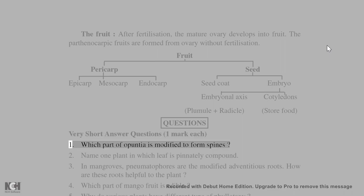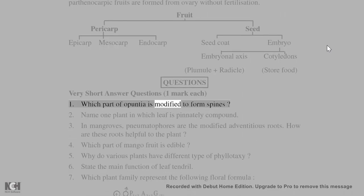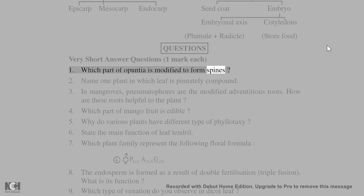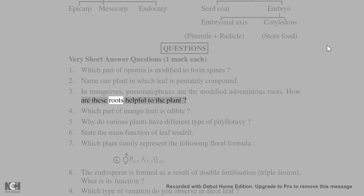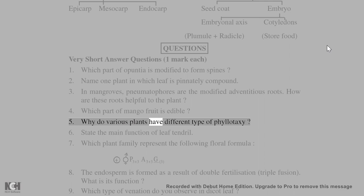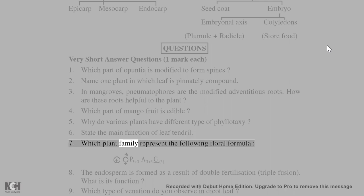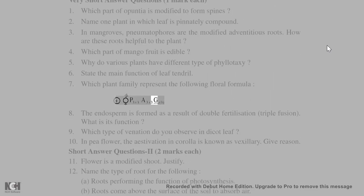Very short answer questions (1 mark each): 1. Which part of opuntia is modified to form spines? 2. Name one plant in which the leaf is pinnately compound. 3. In mangroves, pneumatophores are the modified adventitious roots — how are these roots helpful to the plant? 4. Which part of mango fruit is edible? 5. Why do various plants have different types of phyllotaxy? 6. State the main function of leaf tendril. 7. Which plant family represents the floral formula: ⊕ P3+3 A3+3 G(3)? 8. The endosperm is formed as a result of triple fusion — what is its function?